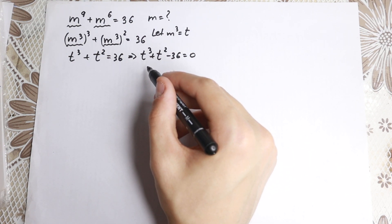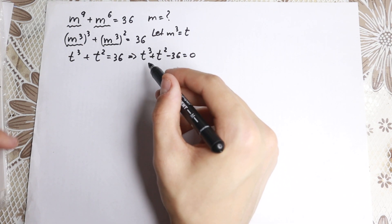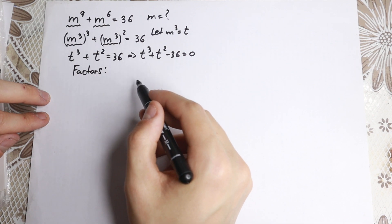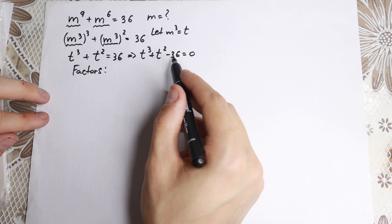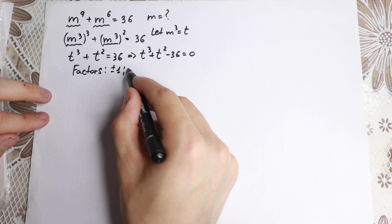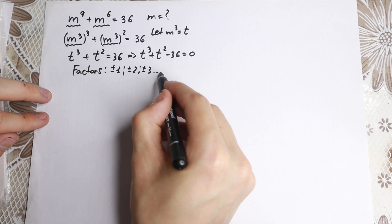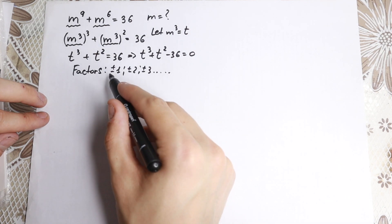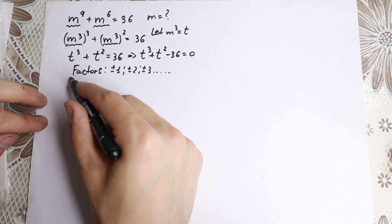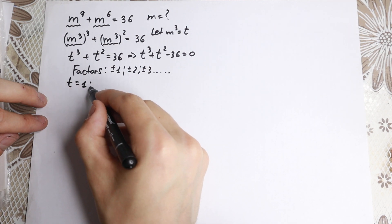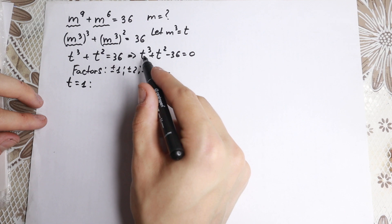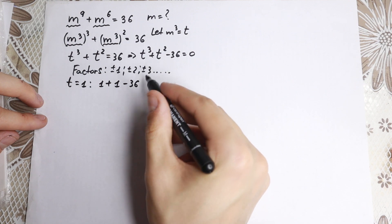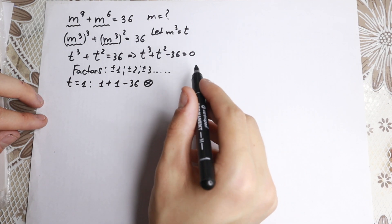This is a cubic equation — you can solve it your own way using a formula — but I want to show you my really interesting approach. We need to find the factors of 36 and check them. There are a lot of factors: plus or minus one, two, three, four, nine, twelve, eighteen, and more. Let's check the positive ones. For t equal to one: one-cubed plus one-squared minus 36 is not equal to zero, so that's not good.